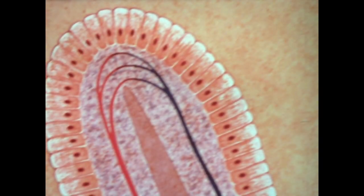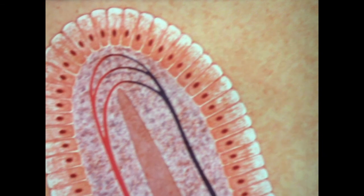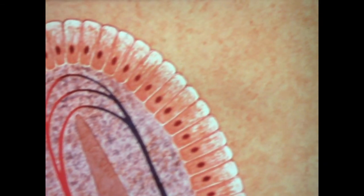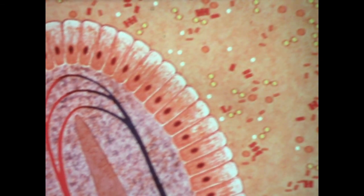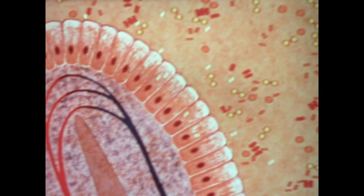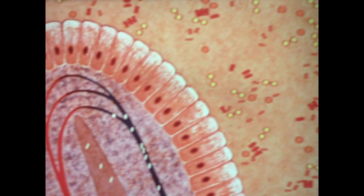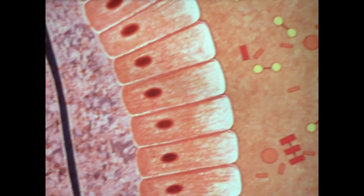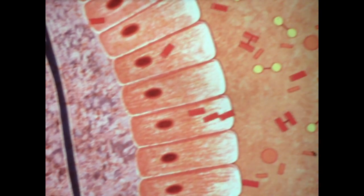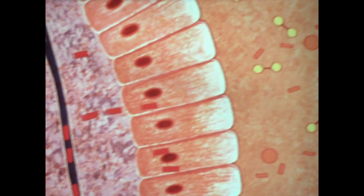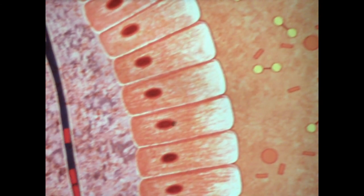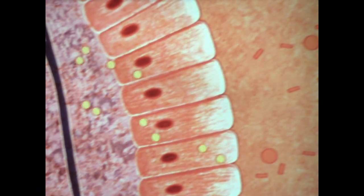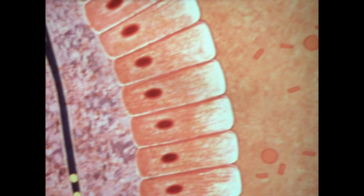Each villus contains a network of blood and lymph vessels and is covered by a layer of absorbing cells. Some nutrients, certain salts, vitamins and water, pass directly through the absorbing cells into the blood and lymph. Molecules of digested protein or amino acids are also absorbed through the villi cells. In a similar way, the products of carbohydrate breakdown, the simple sugars, pass through the absorbing cells into the blood.